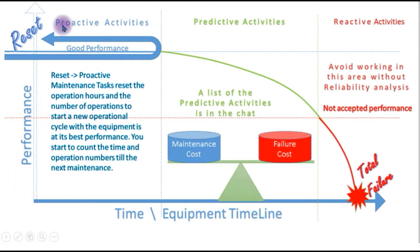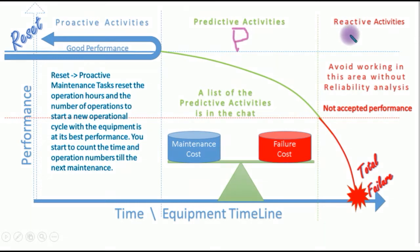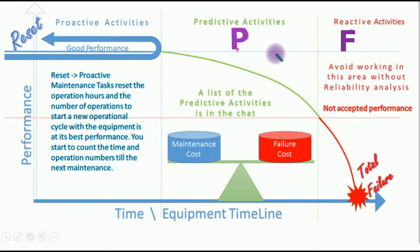This curve is usually called the PF curve. The P is the potential failure, or it refers to the predictive activities that you are doing in this area.